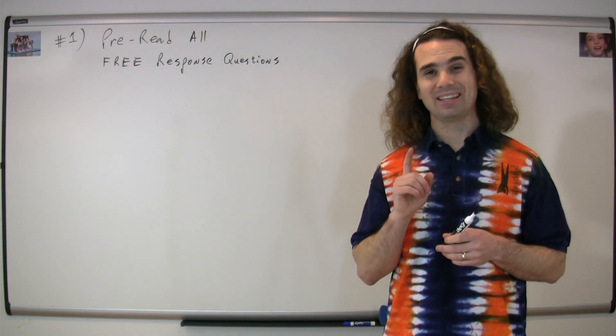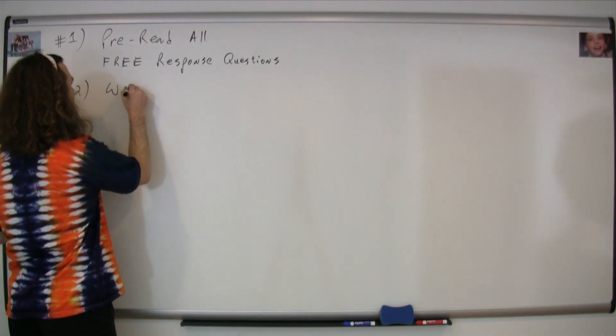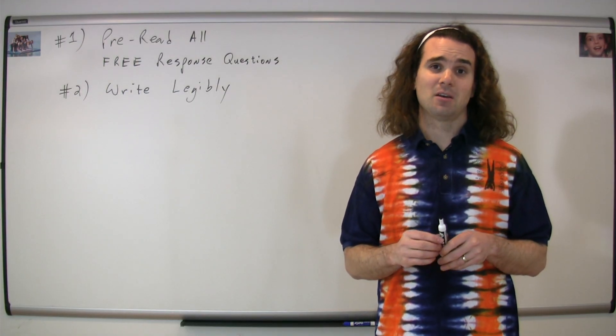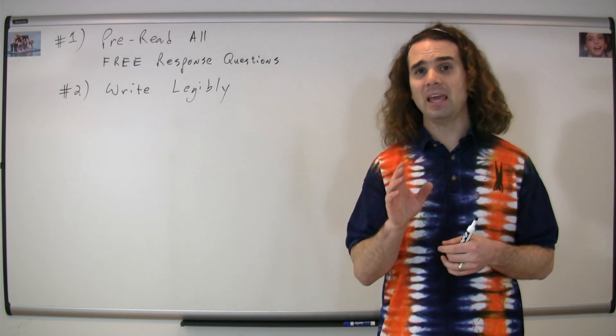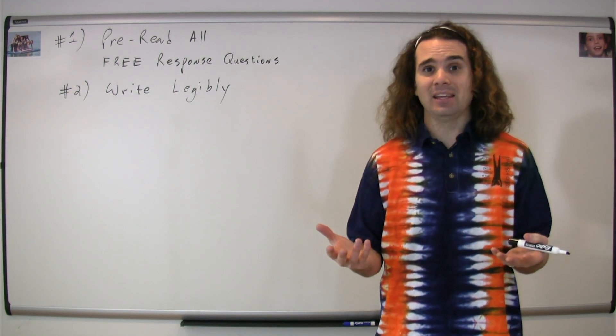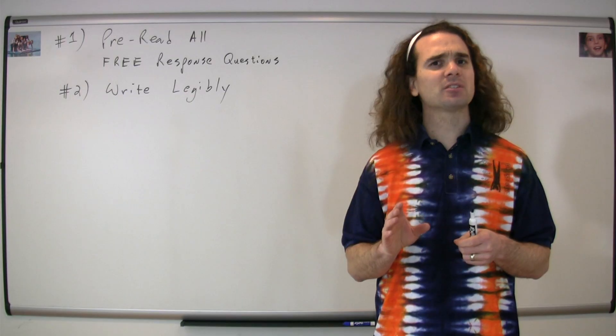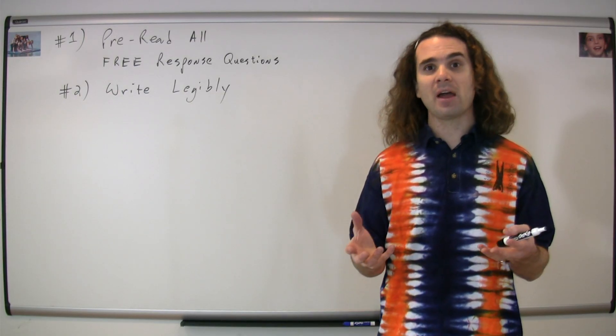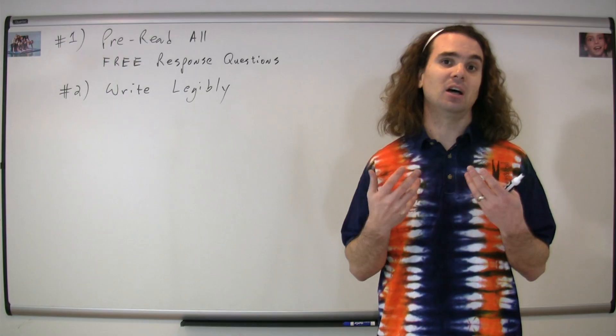Second one: Write legibly. This one is especially difficult for me, but it's an important one because if the AP grader who doesn't know you at all can't read what you've written, then they can't grade it. It's as simple as that. If for some reason you have a particular letter or something that you have a hard time writing down, then give the grader a legend.